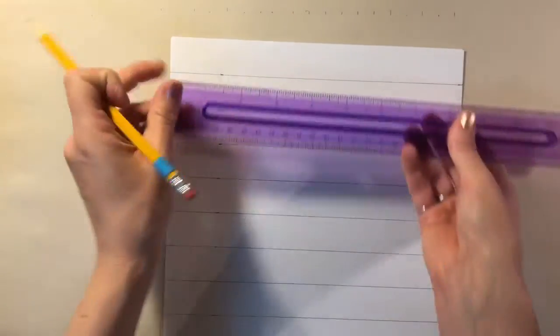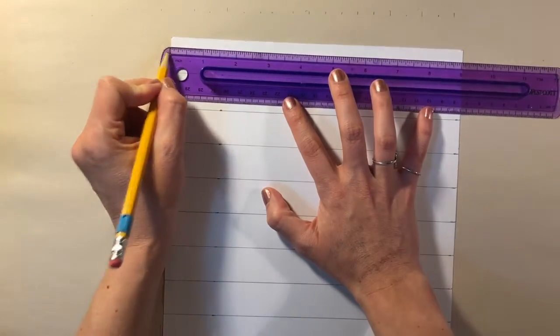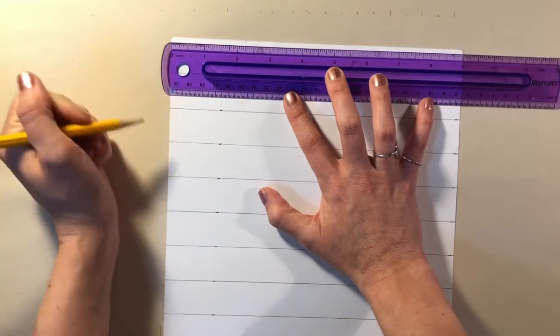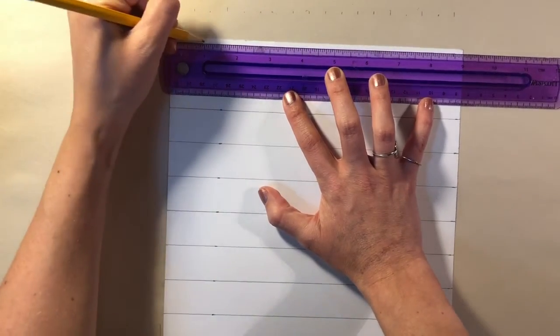Then you're going to turn your paper vertically and we're going to repeat that process along the short side. So take your ruler, line up the zero at the top with the edge of the paper, and make a tick mark at every inch.